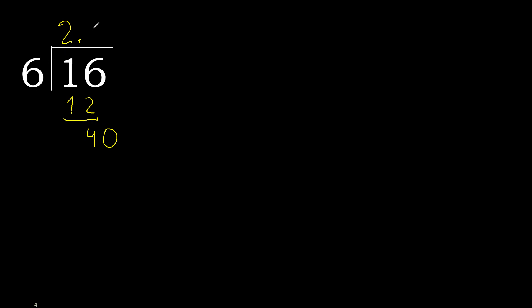6 multiplied by 7 is greater. 6 multiplied by 6 is 36. Subtract. Complete — always complete with 0.